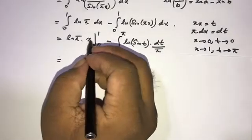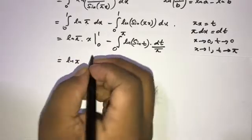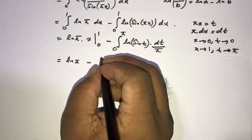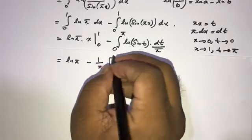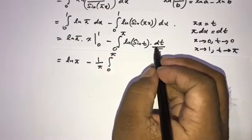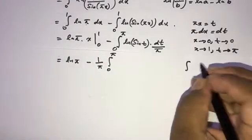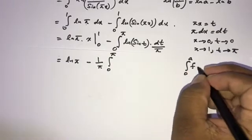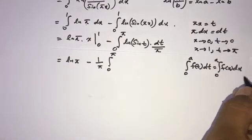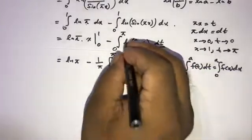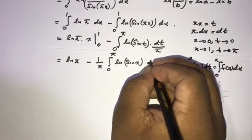Now we know that the integral is independent of the dummy variable, so the integral from 0 to pi of f(t) dt equals the integral from 0 to pi of f(x) dx. We can also use the symmetry to rewrite the upper limit as pi over 2 and multiply by 2, giving us: ln(pi) minus (1/pi) times 2 times the integral from 0 to pi/2 of ln(sin x) dx.